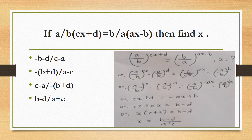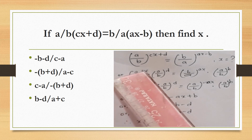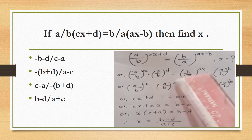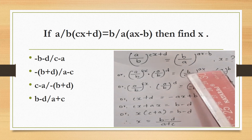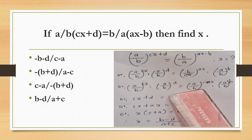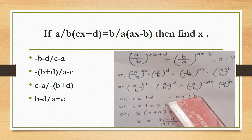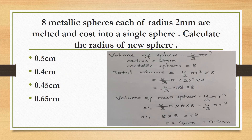If (a/b) to the power (cx plus d) equals (b/a) to the power (cx minus bx), find the value. Rewriting (b/a) as (a/b) to the power minus 1, equating exponents gives cx plus d equals minus(cx minus bx). Solving, the result is (b minus d) upon (a plus c).